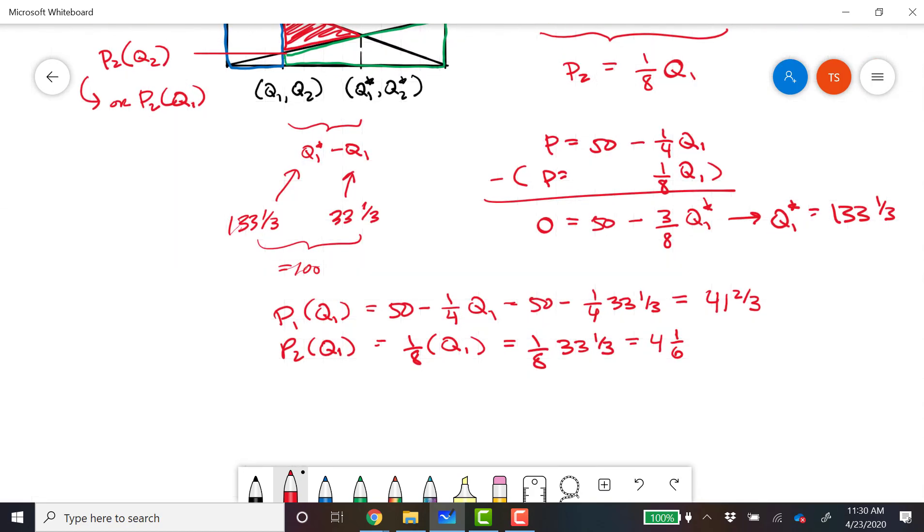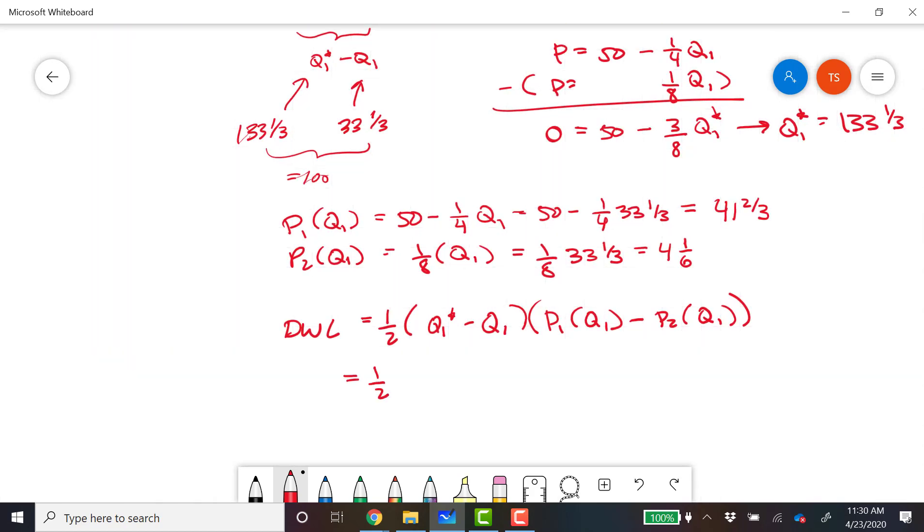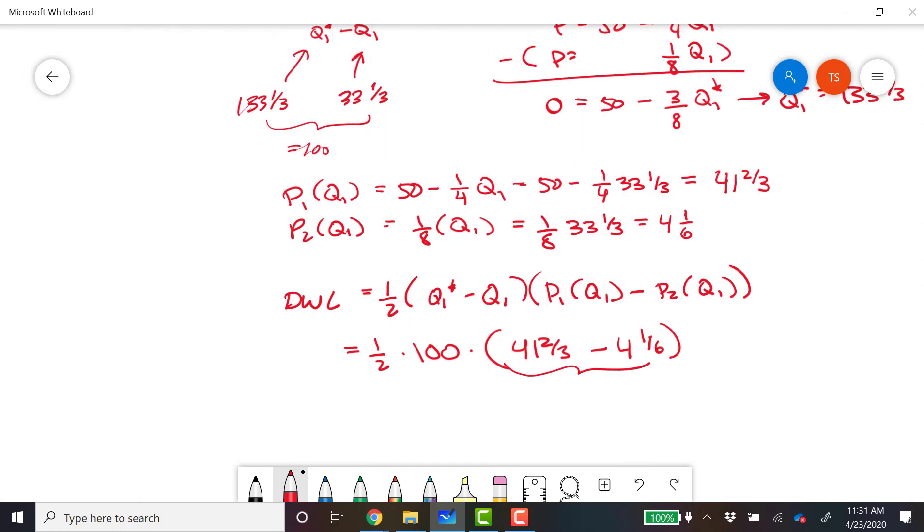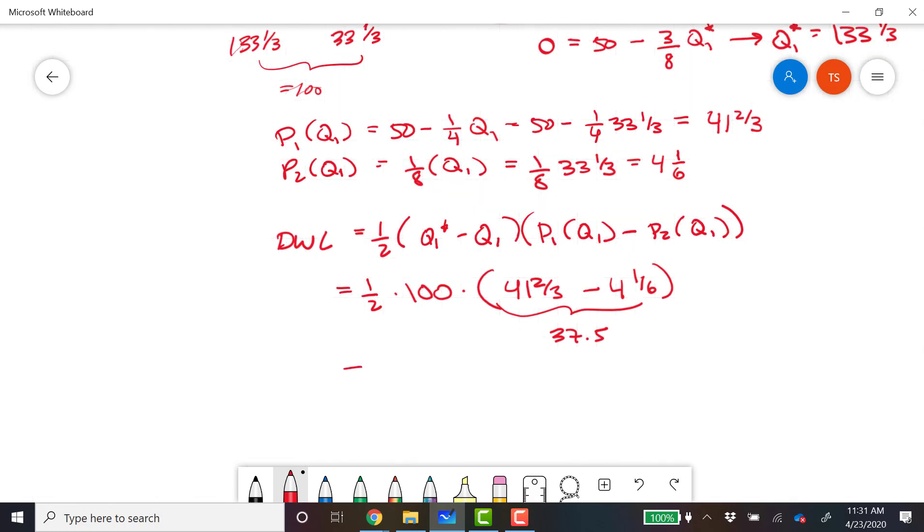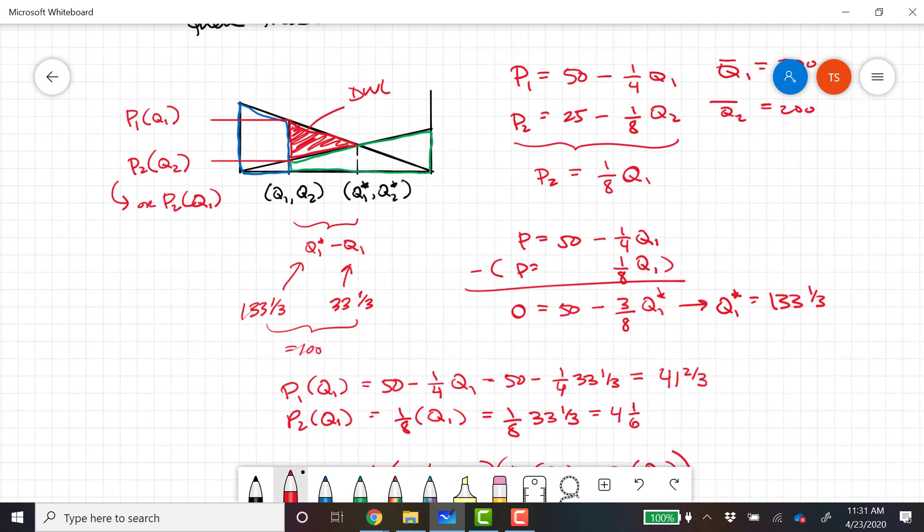So our triangle area, our deadweight loss, is equal to Q1 star minus Q1, there's always a half when it's a triangle, times P1 of Q1 minus P2. This equals 1 half times 100 times 41 and 2 thirds minus 4 and 1 sixth. This guy here equals 37.5 and so this guy here equals 1 half of that, which is 18 and 3 quarters. So this should be 1875 dollars. So there's our example, all the way through from start to finish.